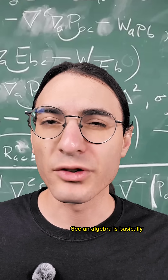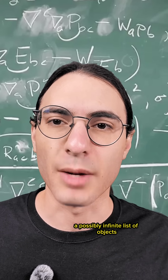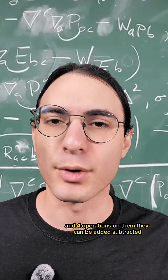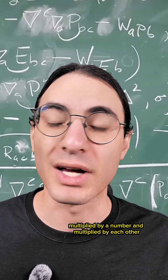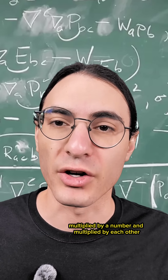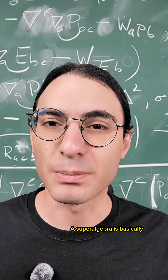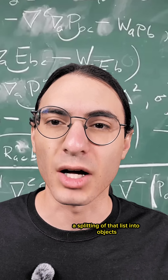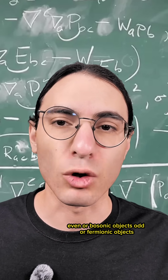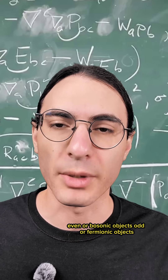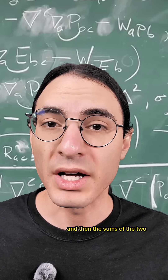An algebra is basically a possibly infinite list of objects and four operations on them. They can be added, subtracted, multiplied by a number, and multiplied by each other. A superalgebra is basically a splitting of that list into objects of three groupings: even or bosonic objects, odd or fermionic objects, and then sums of the two.